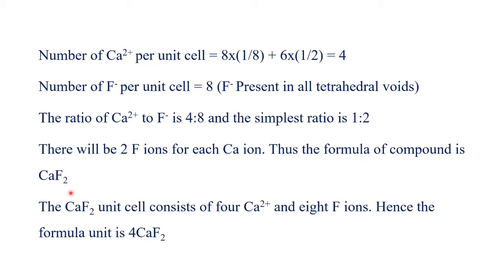One might ask: could fluoride ions occupy octahedral voids instead? There are only n = 4 octahedral voids in an FCC unit cell. If F⁻ occupied octahedral voids, the Ca²⁺ to F⁻ ratio would be 4:4, giving a formula of CaF — not CaF₂. Since the correct formula is CaF₂, fluoride ions must occupy the tetrahedral voids, not the octahedral voids.